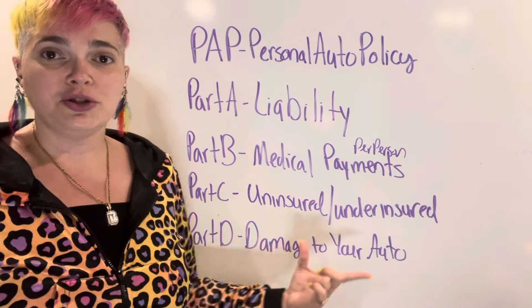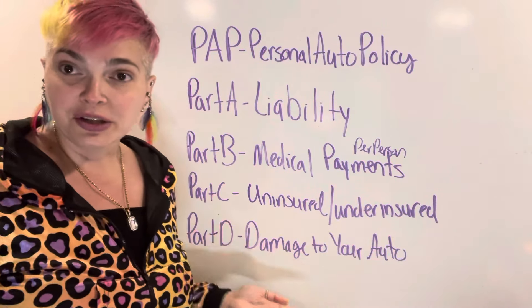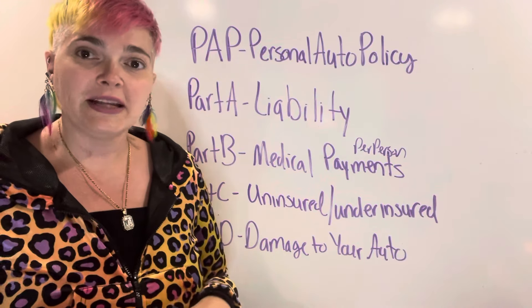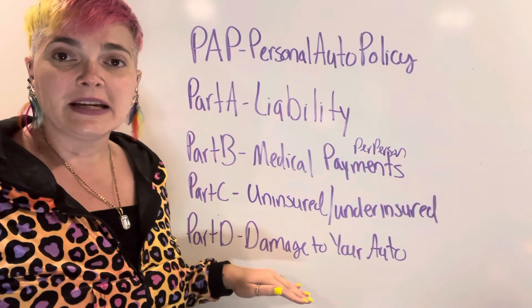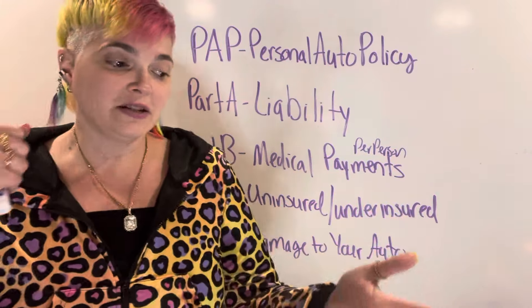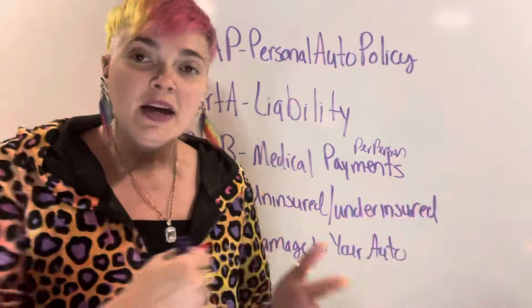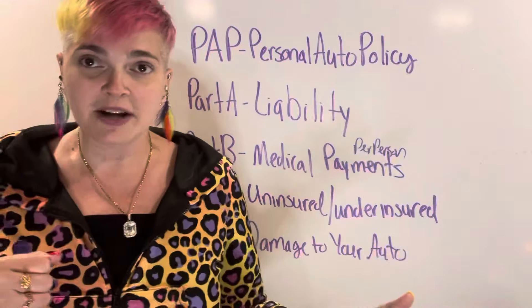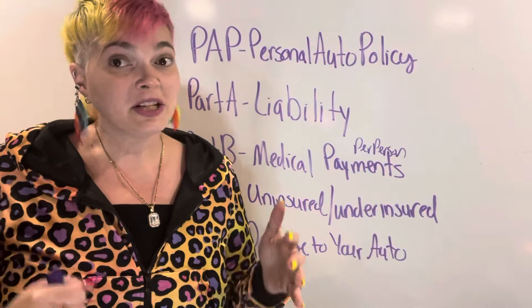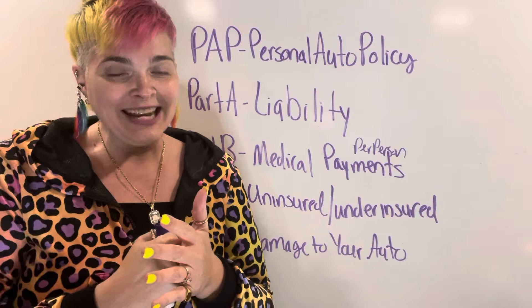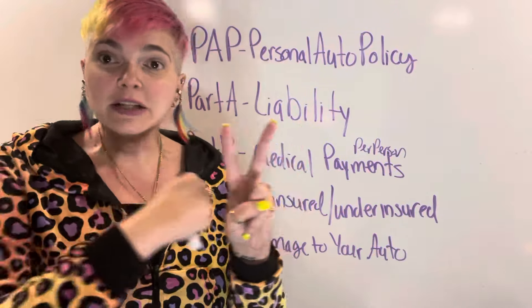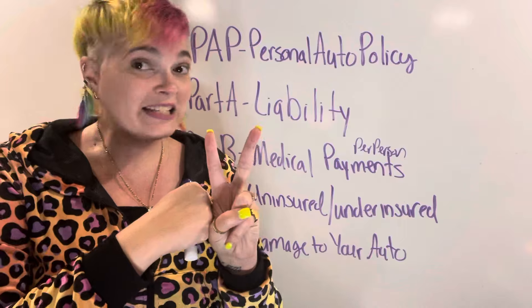Part D is damage to your auto. This is where you get your collision or comprehensive coverage. If your car is damaged or broken in the accident, that falls under collision or other than collision. Collision is any time you hit something — you crash into a tree, a building, or another car. The only time collision is not collision is when you hit an animal; if you crash into a deer, it is not collision.